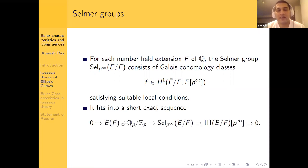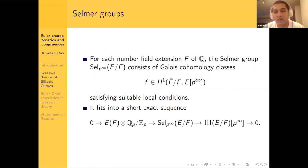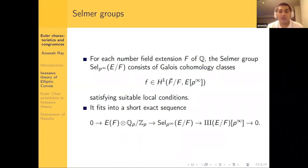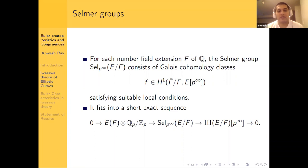The key point is that the Selmer group sits in a short exact sequence. On the right side we have the P-primary part of the Shafarevich-Tate group, which is conjectured to be finite. On the other side we have the points coming from the elliptic curve over the number field. So the Selmer group really describes the points on the elliptic curve, and this is why Selmer groups are really interesting.